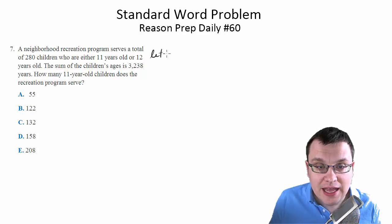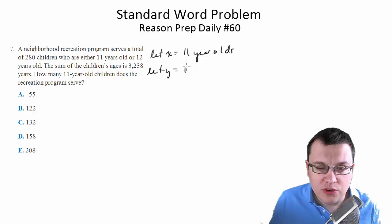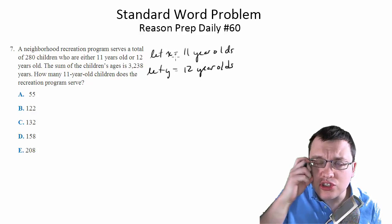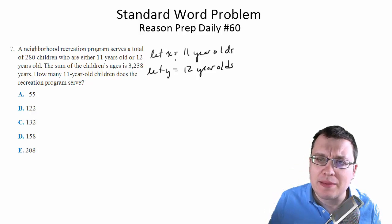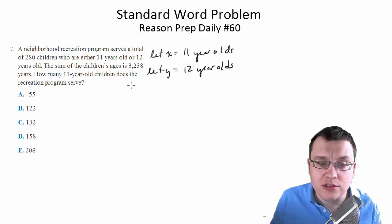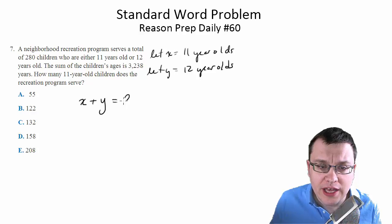So let's let x equal the 11-year-olds and let's let y equal the 12-year-olds. And it's really good to write this out just so that you are clear on the definitions of your terms so that you don't make any mistakes later when you're setting up your equations. So the total number of children is 280, so the number of 11-year-olds and 12-year-olds should add up to 280.